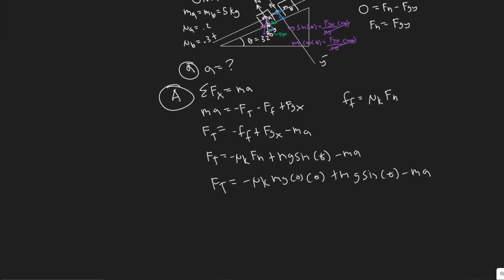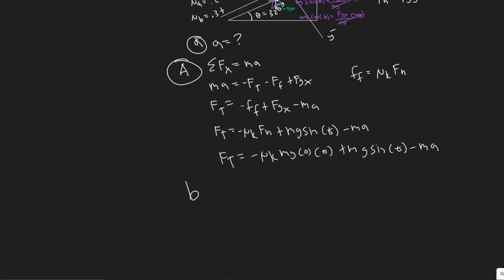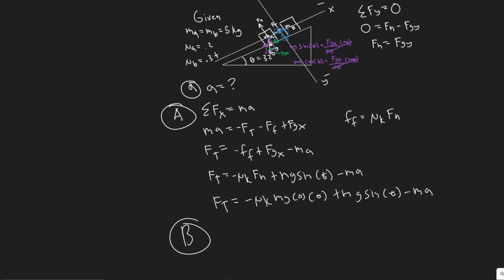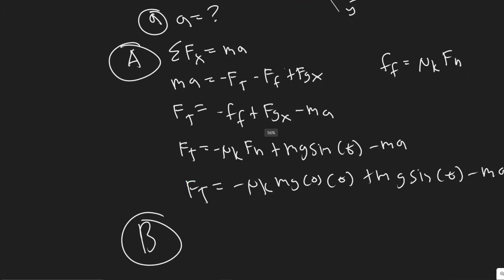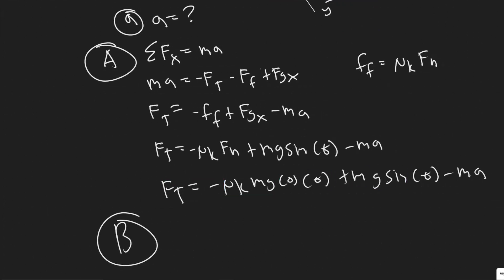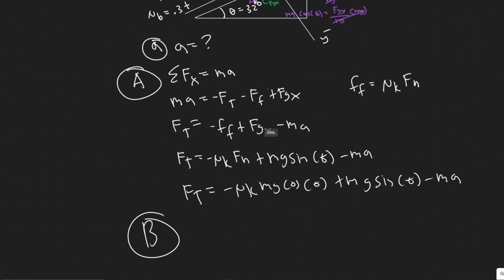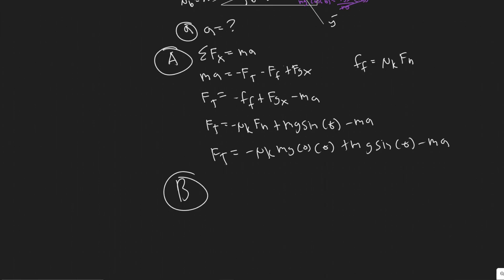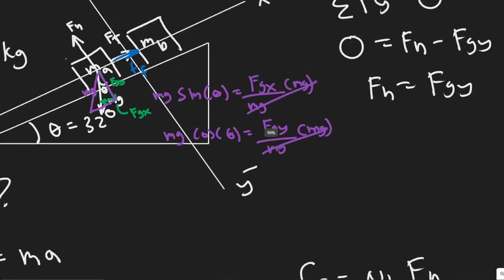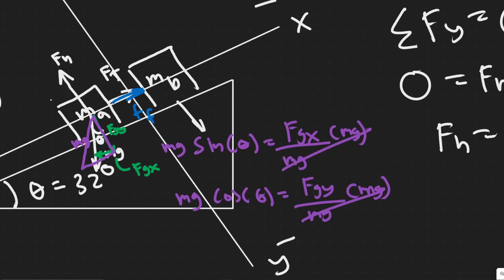We're going to have to do this for both blocks. We'll go through B a bit faster. The key difference is that for block B, the tension now points the other way — up the incline. So F of T for block B points in the positive x direction, while the force of friction is still acting to the right, negative. MG still points straight down with the same x and y components.